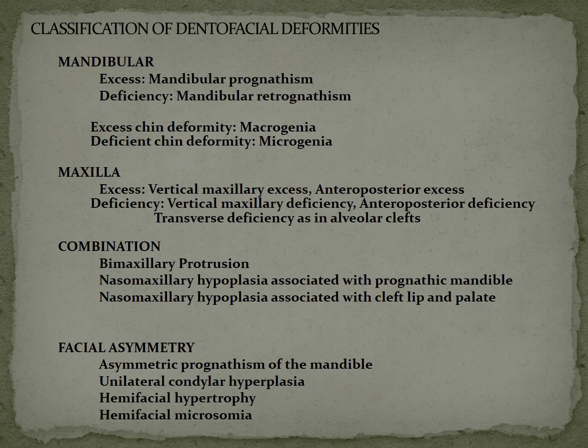To review your orthodontics knowledge, here is the classification of dentofacial deformity. For the mandible: excess mandibular growth is called mandibular prognathism; deficient growth is called mandibular retrognathism. When the deformity is restricted to the chin, excess is called macrogenia and deficient chin deformity is called microgenia. Moving to the maxilla, you have vertical maxillary excess and anterior-posterior excess depending on the dimension.